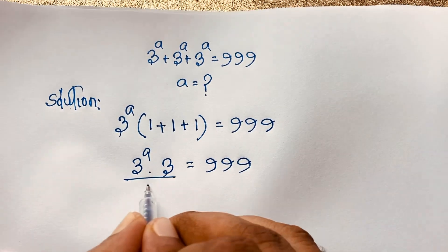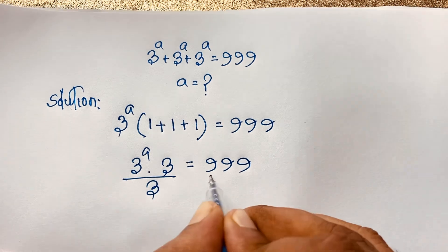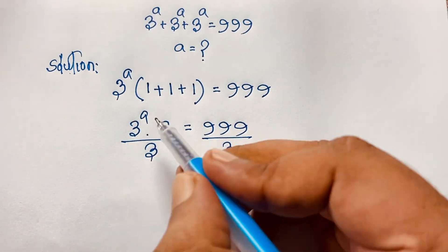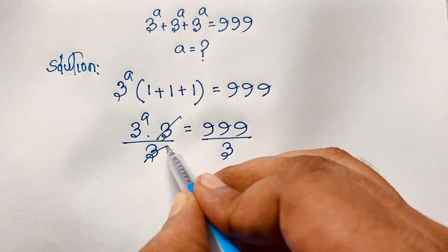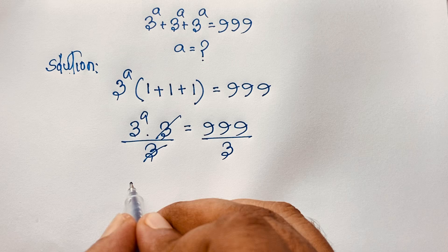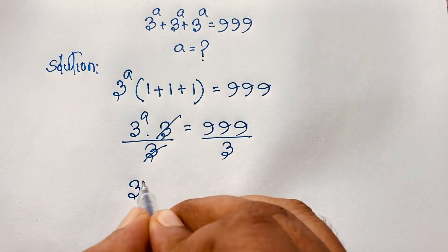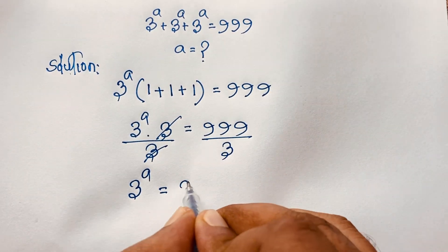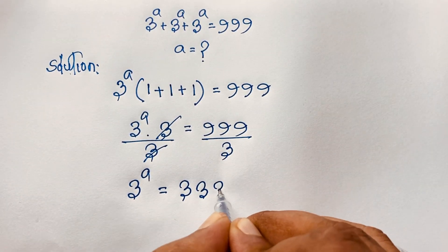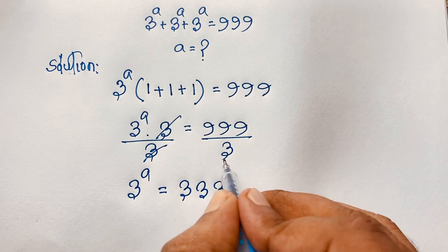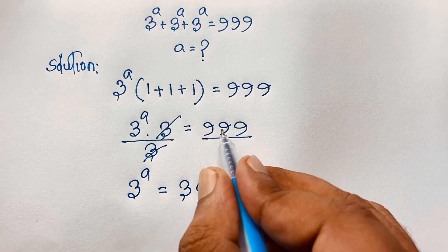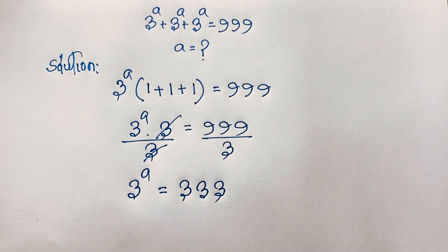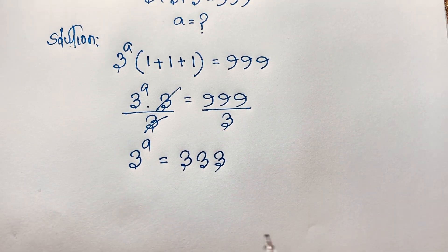Now I divide both sides by 3. The 3s cancel out, and we find that 3 to the power a is equal to 333. This is because 999 divided by 3 equals 333.